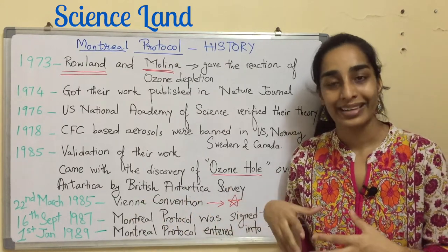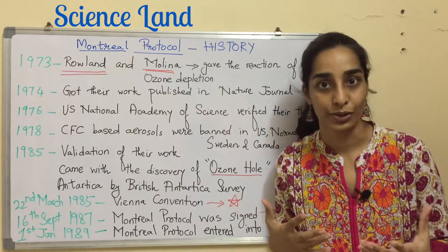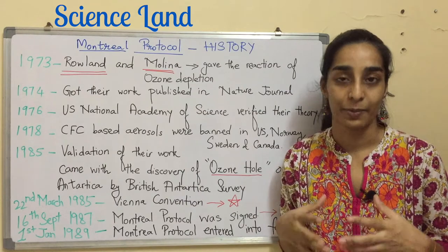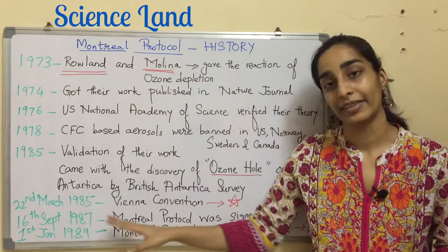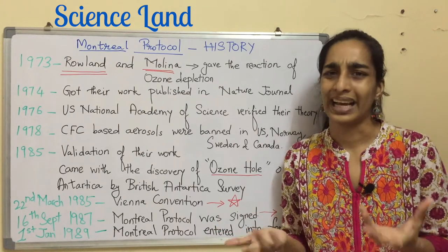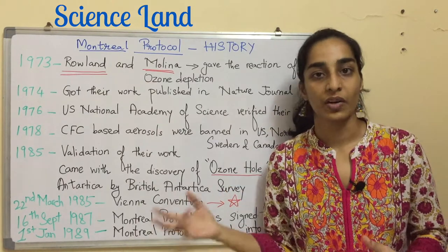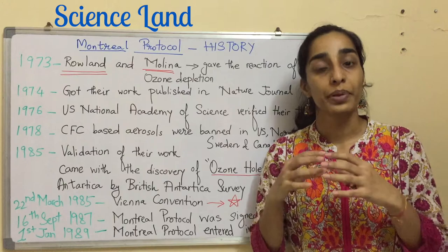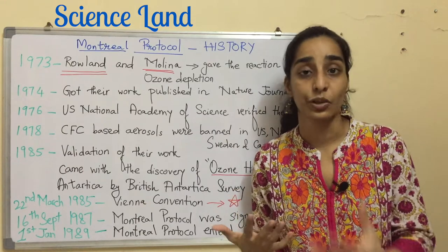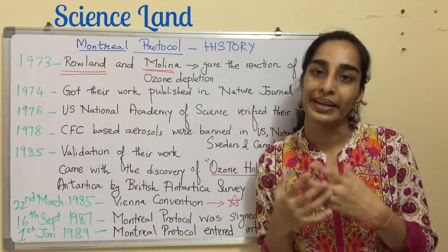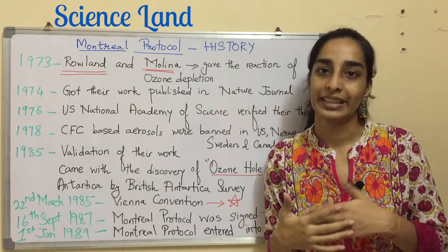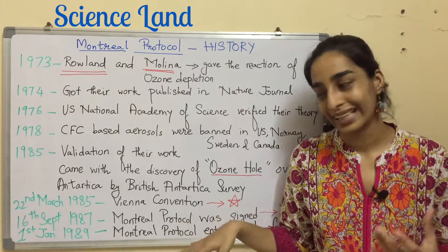In 1985, the ozone hole over Antarctica was discovered. This study was done by the British Antarctic Survey and they published their report in Nature journal. The report essentially validated their hypothesis, and that's when everyone was scared. On 22nd March 1985, the Vienna Convention for the Protection of the Ozone Layer came into existence, initially signed by just 20 nations. This convention served two purposes: first, to promote cooperation amongst countries to exchange information about the effects of human activities on the ozone layer; and second, to provide a framework — the foundation of the CFC controlling protocol.